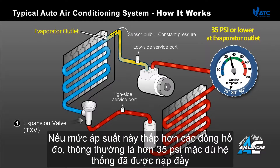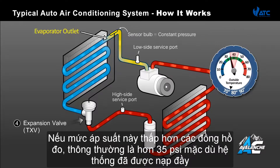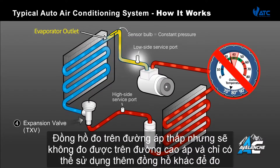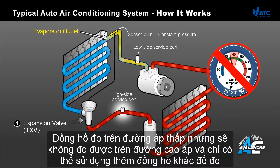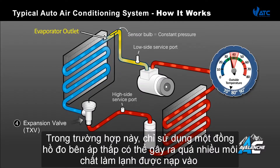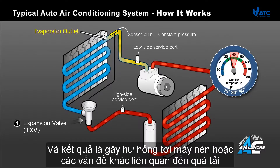If this pressure level is below the gauge's established correct fill — which is typically over 35 psi — even though the system is fully charged, adding additional refrigerant will not show on the low side pressure gauge, but will build up on the high side and can only be measured using a high side gauge. In these cases, using only a low side gauge can potentially cause too much refrigerant to be added and result in damage to the compressor or other problems associated with overcharging.